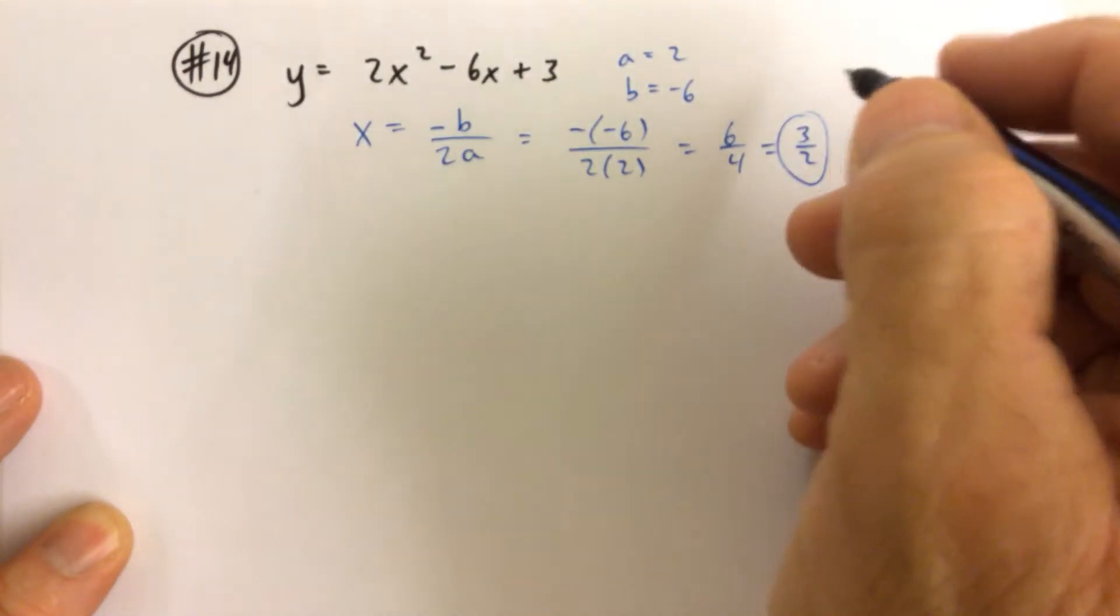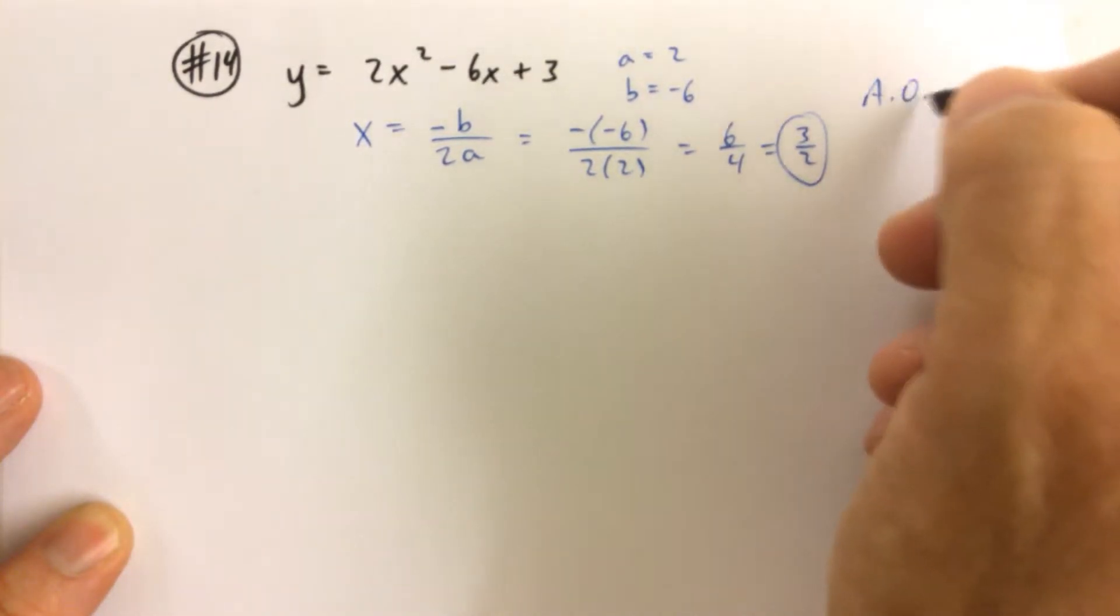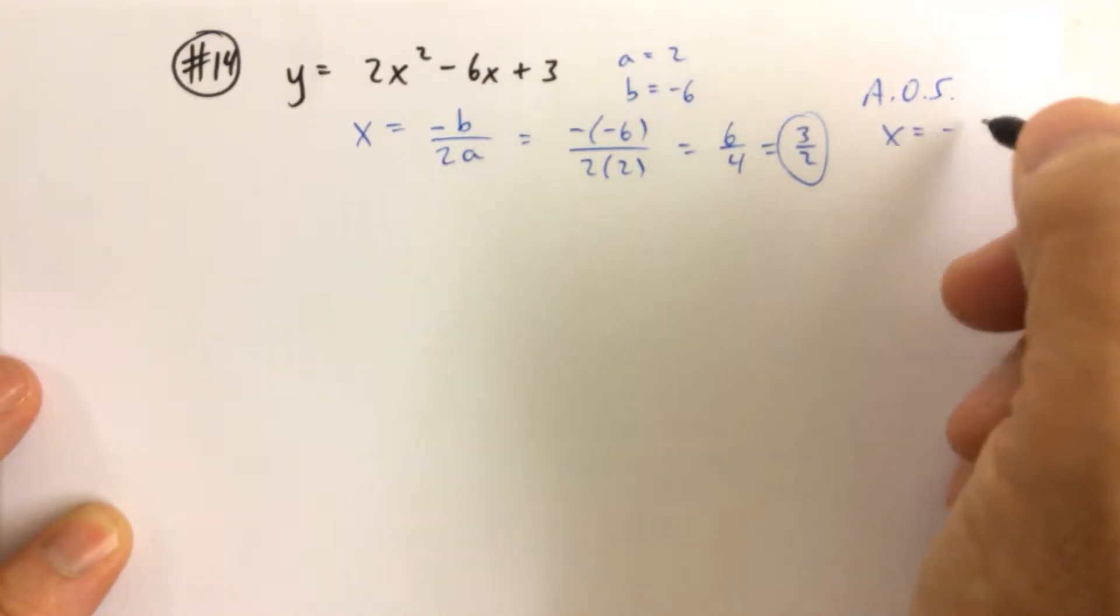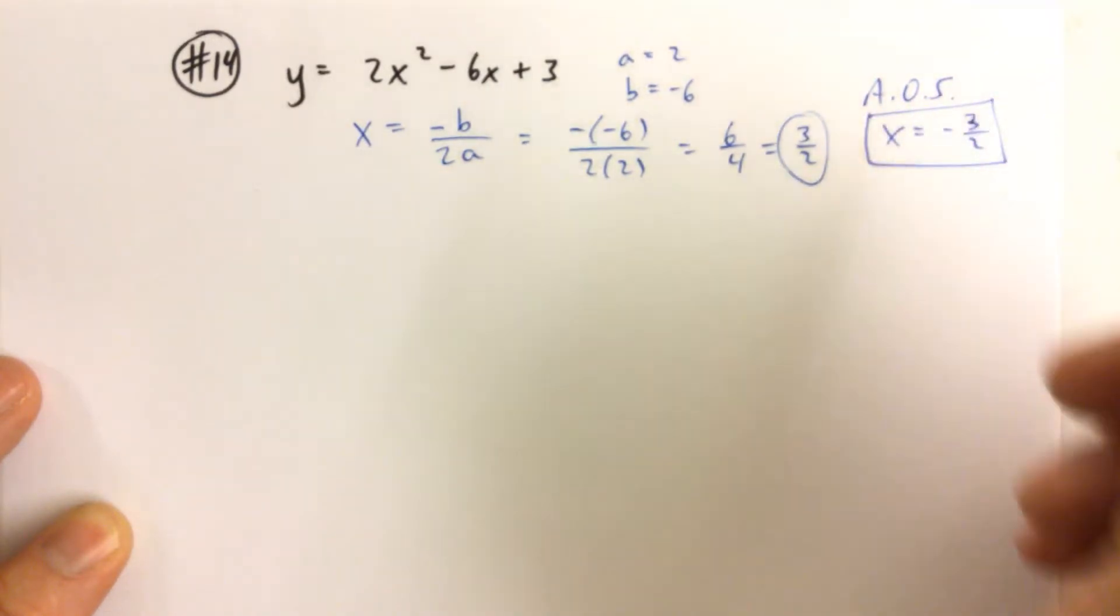So that's the x-coordinate of the vertex. In fact, that's also the axis of symmetry. The equation for the axis of symmetry is x equals 3 halves. So that's the first part.